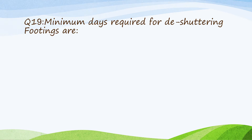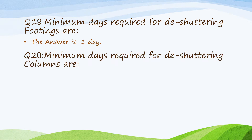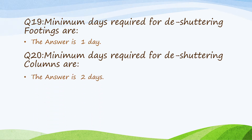Minimum days required for de-shuttering footings are 1 day, 24 hours. Question 20: minimum days required for de-shuttering columns are 2 days, 48 hours.